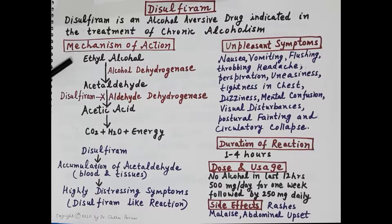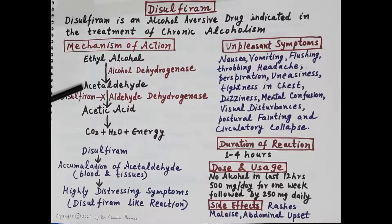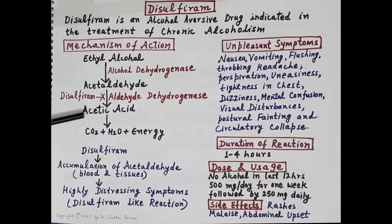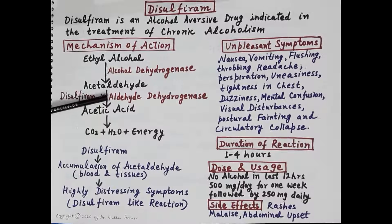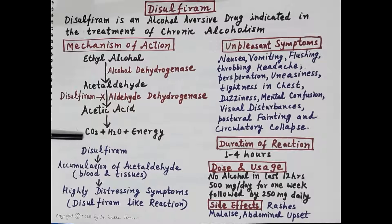Now let's see how this happens — the mechanism of action of disulfiram. Ethyl alcohol is metabolized in the liver; 98% of ethyl alcohol is metabolized there. Ethyl alcohol is metabolized to acetaldehyde by the enzyme alcohol dehydrogenase. Acetaldehyde is further metabolized to acetic acid by the enzyme aldehyde dehydrogenase. Acetic acid is then converted into carbon dioxide and water with the release of energy.